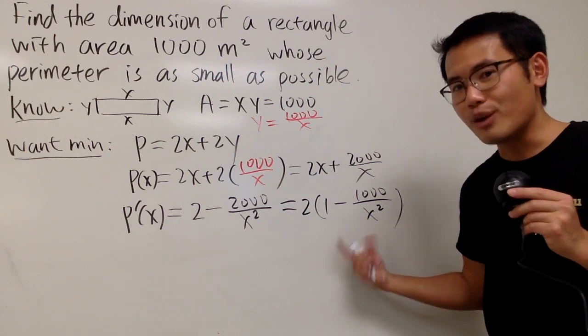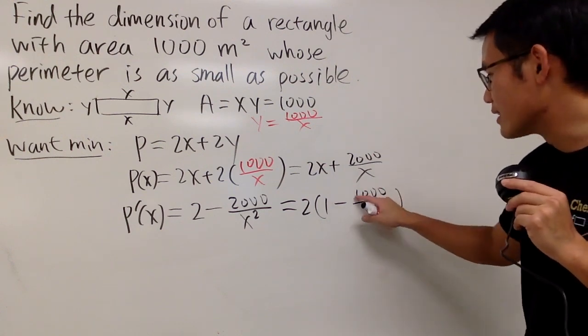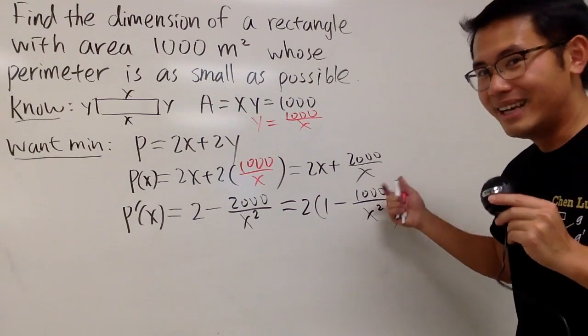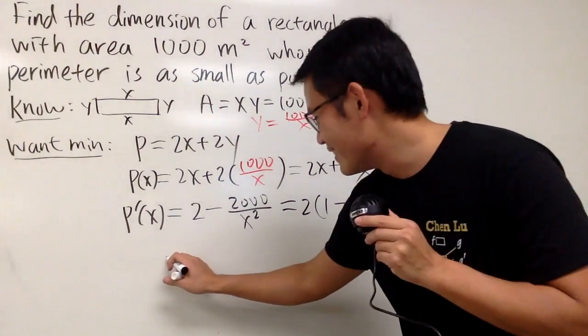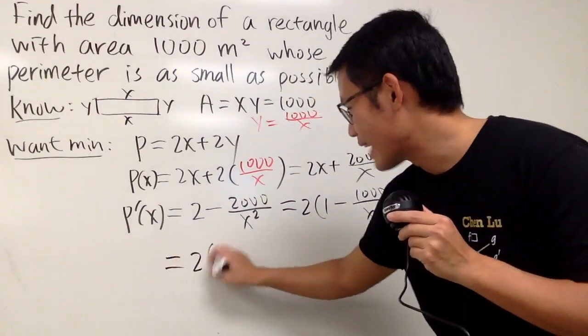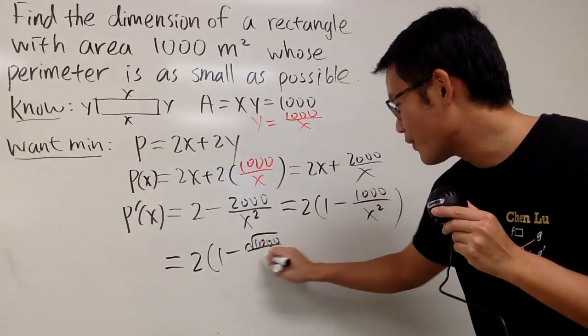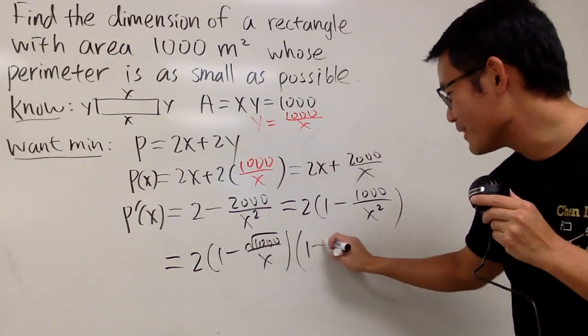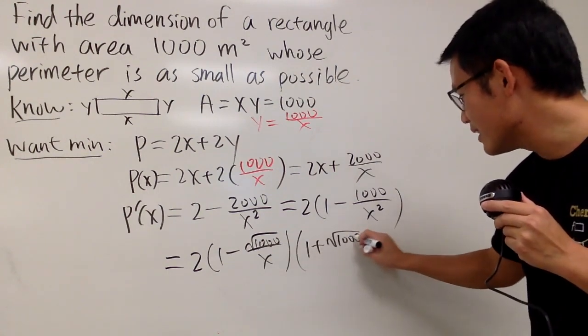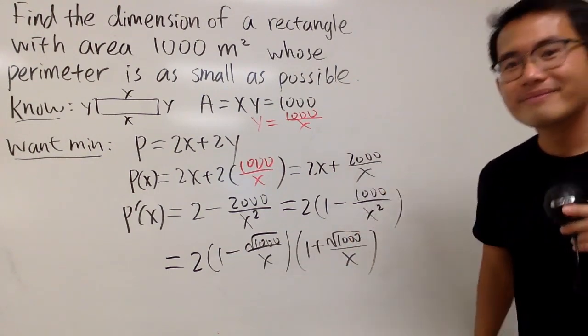This right here, I can still look at this as the difference of 2 squares by looking at the 1000 as the square root of 1000 squared. So, I will factor it again. So, I have 2 times 1 minus square root of 1000 over x times 1 plus square root of 1000 over x.